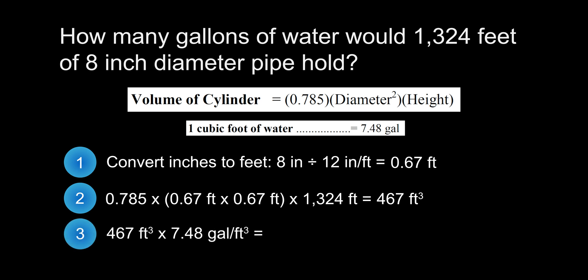In the final step, we will take the volume of the pipe, which was 467 cubic feet, and multiply it by the conversion factor of 7.48 gallons per cubic foot, yielding our final answer of 3,493 gallons.